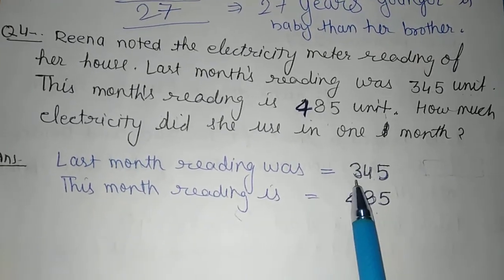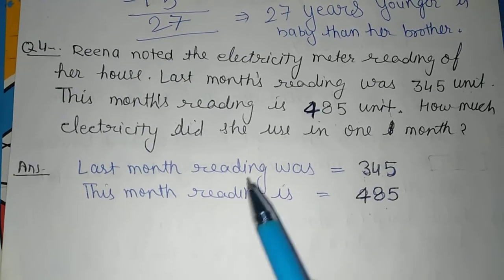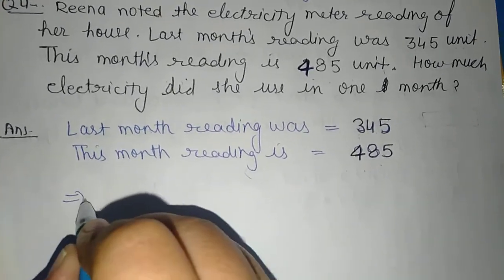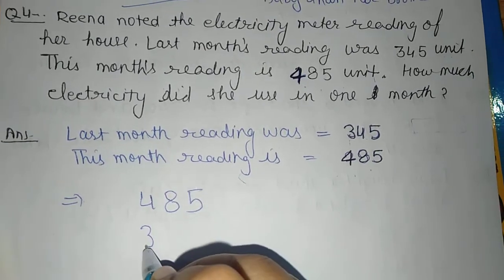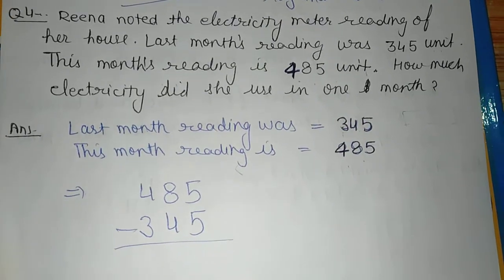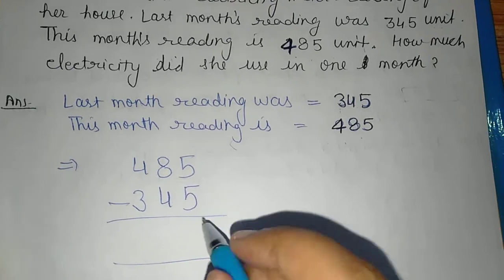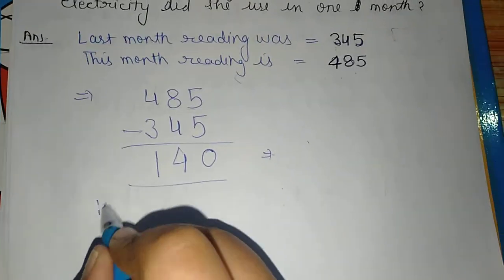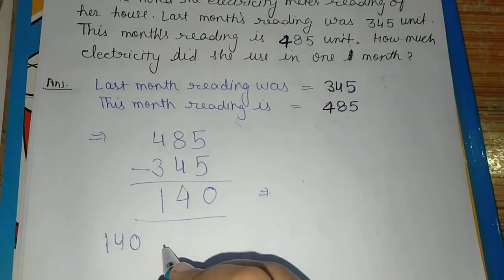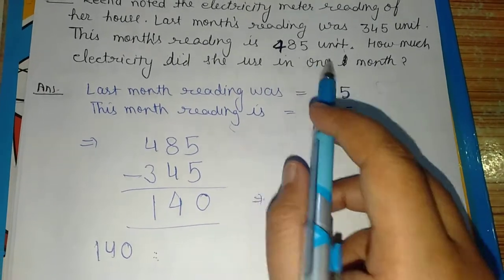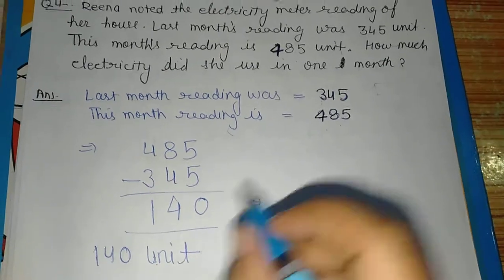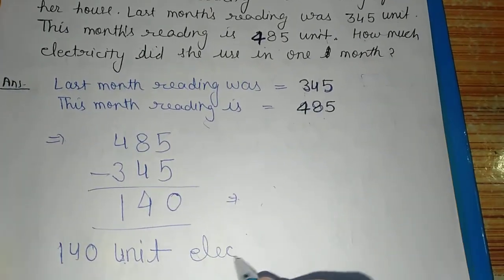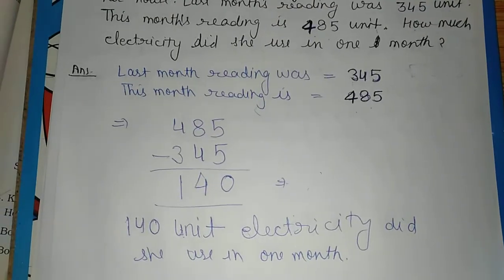Again — comparison. Last month's reading was less, this month's reading is more — how much is the difference? We will do minus. As told before, when we compare, always do subtraction. So 485 minus 345 equals 140. The statement becomes — not rupees, not years, not runs — units. So 140 units of electricity did she use in one month.